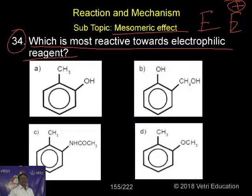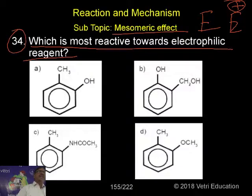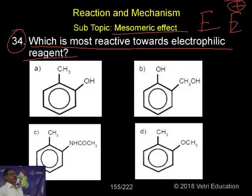Or Br+ for halogenation. Fourth is nitration — NO2+. And fifth is sulfonation — SO3, which is neutral. So these are all electrophiles.